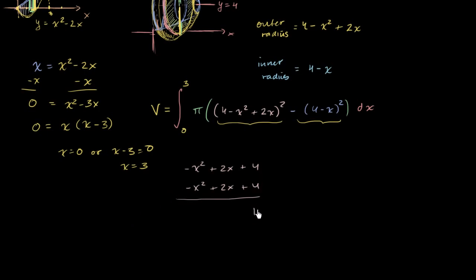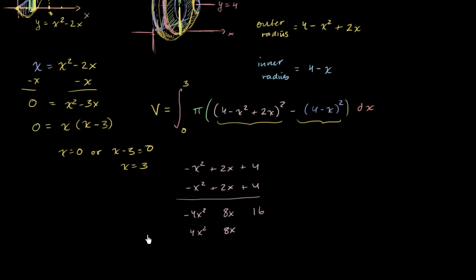So 4 times 4 is 16. 4 times 2x is 8x. 4 times negative x squared is negative 4x squared. 2x times 4 is 8x. 2x times 2x is 4x squared. Then 2x times negative x squared is negative 2x to the third power.